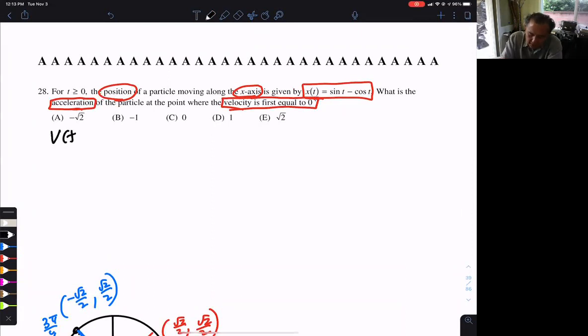So how do you find velocity? Well, that's going to be the derivative of the position. Well, here we go. What's the derivative of sine? And everyone says, that's cosine.